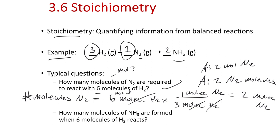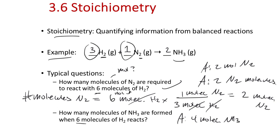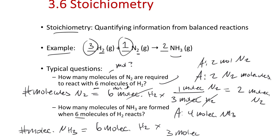How many molecules of NH₃ are formed when 6 molecules of H₂ react? For every 3 molecules of H₂ that react, we get 2 molecules of NH₃. So: 6 molecules H₂ × (2 molecules NH₃ / 3 molecules H₂) = 4 molecules of NH₃.